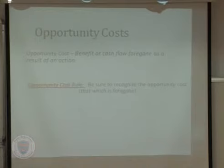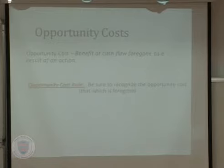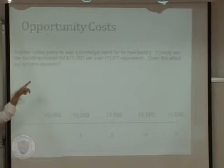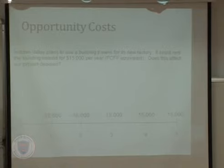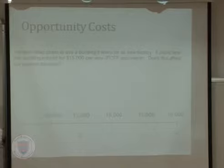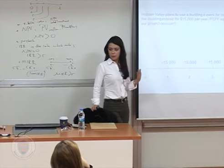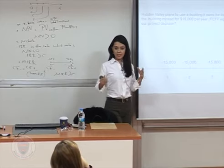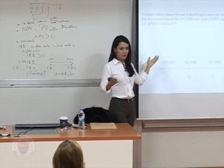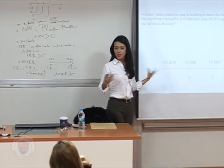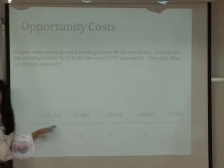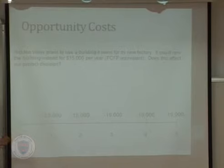Another thing to think about is opportunity costs — the benefit or cash flow foregone as a result of taking an action. Since you are taking the project, you will give up some things, and this is called opportunity cost. For example: Hidden Valley plans to use the same building, which it could alternatively rent out for $15,000 per year. Because of the project, you will not be able to rent it. So this $15,000 is your opportunity cost — you are foregoing this revenue — and every year you need to include it in your analysis.